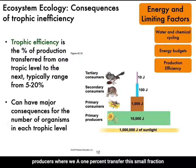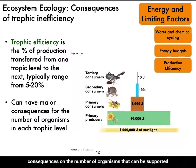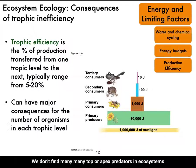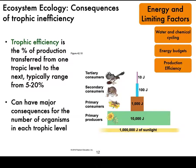This small fraction of energy transfer between trophic levels can have major consequences on the number of organisms that can be supported in each trophic level. We don't find many top or apex predators in ecosystems because there isn't sufficient energy at the lower trophic levels to support them.